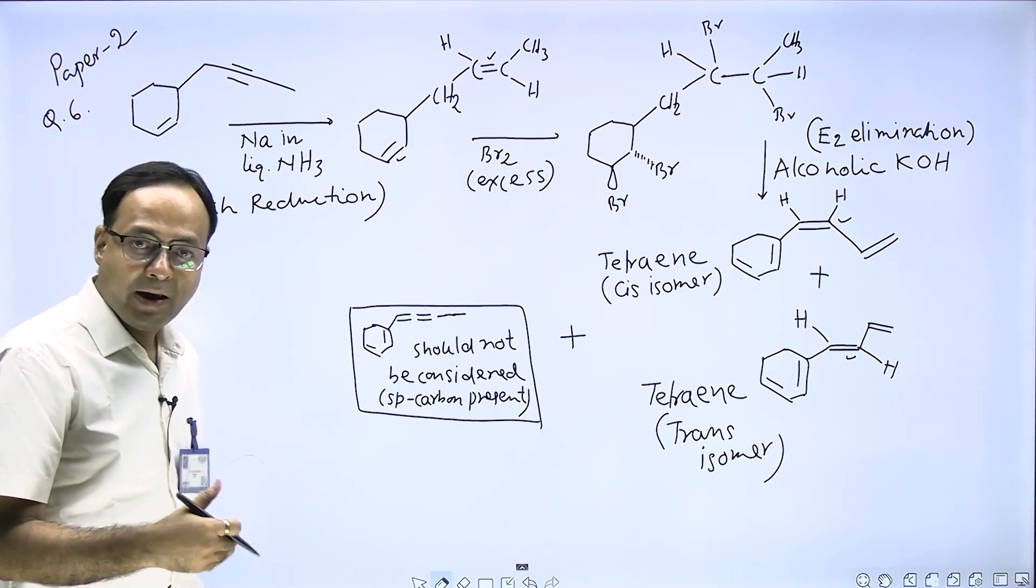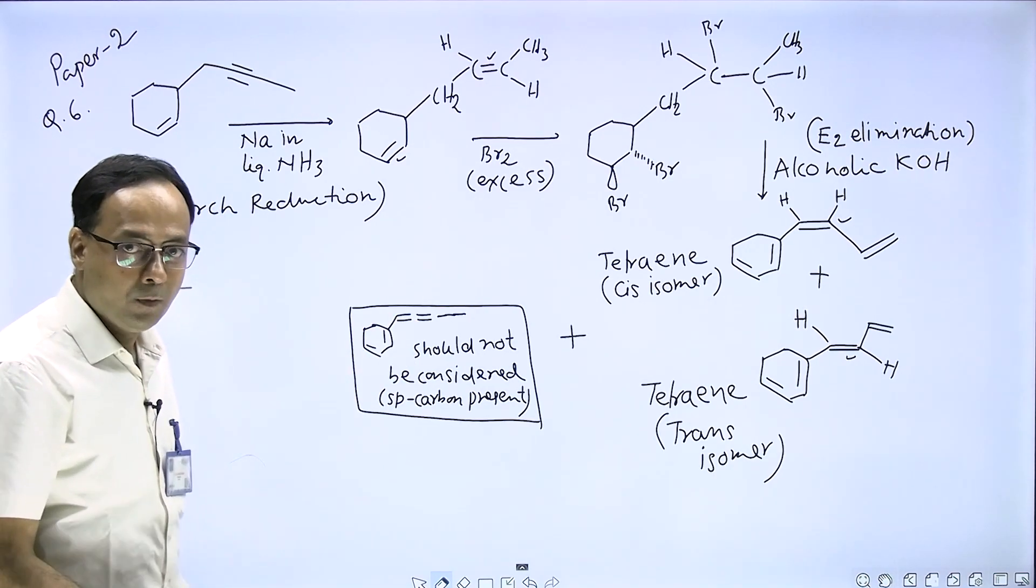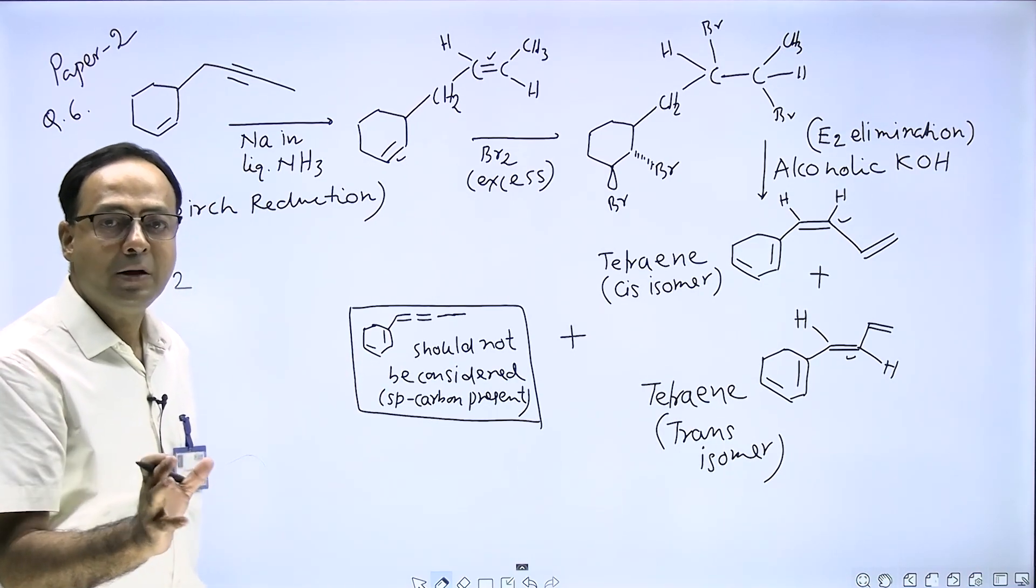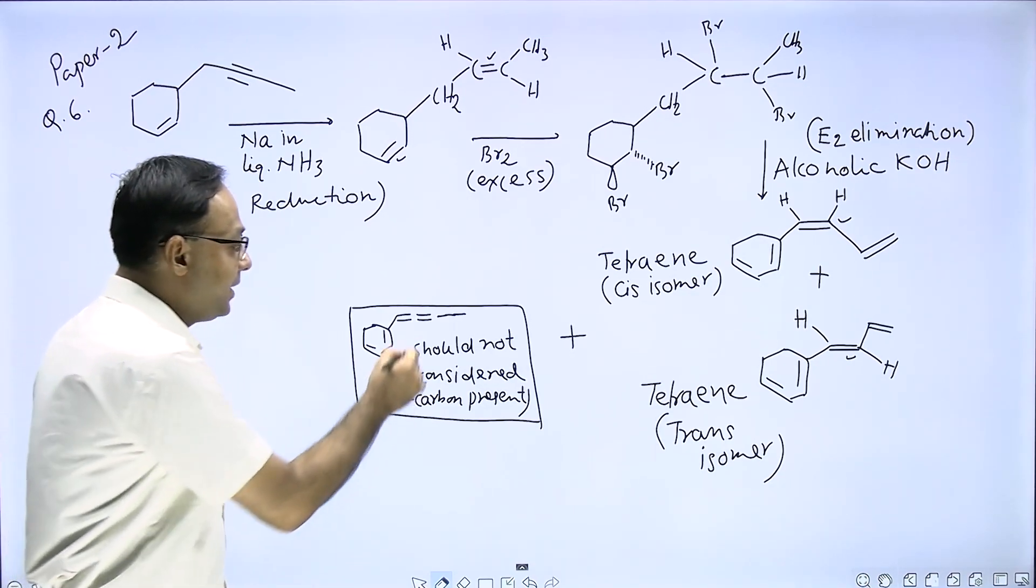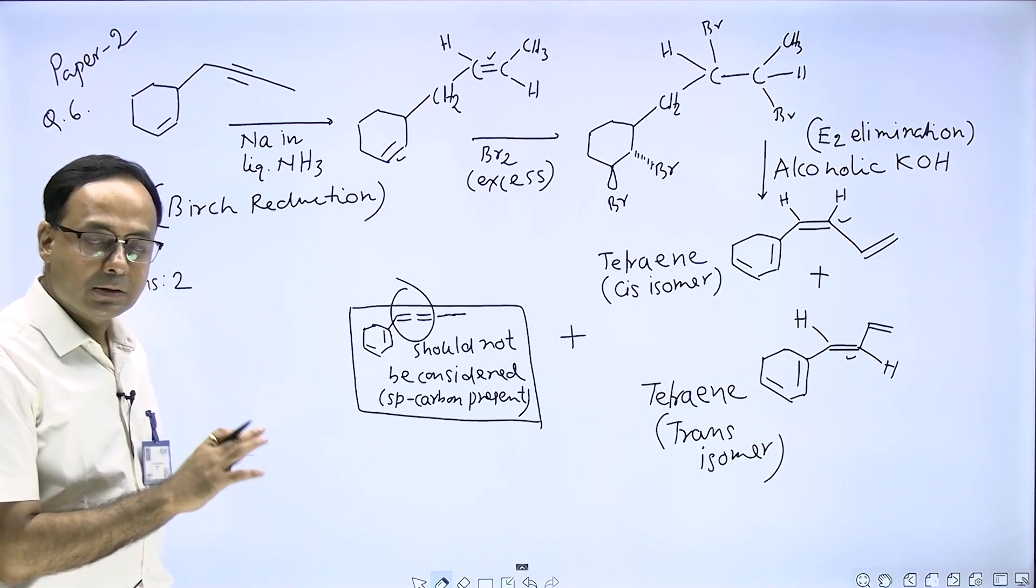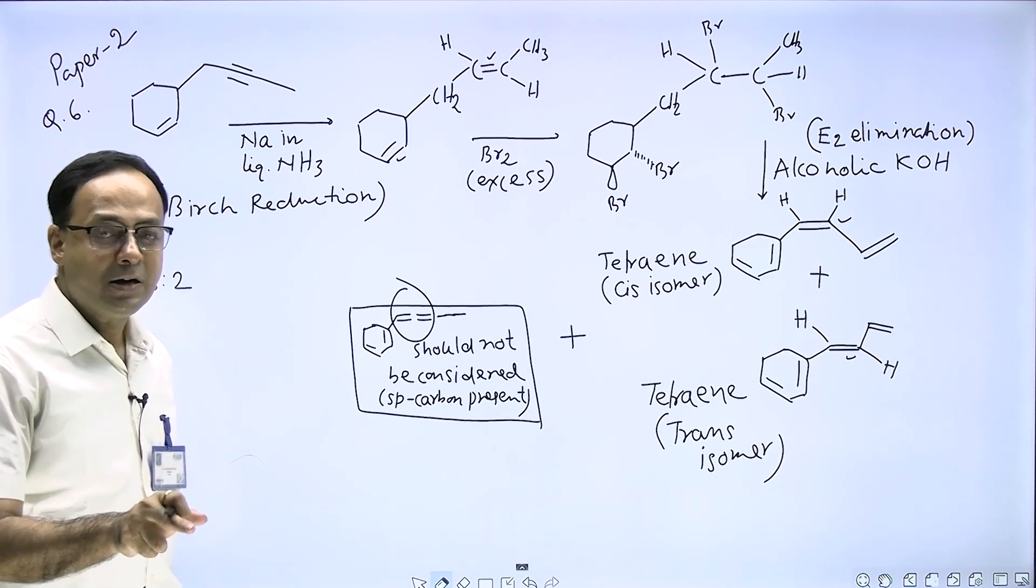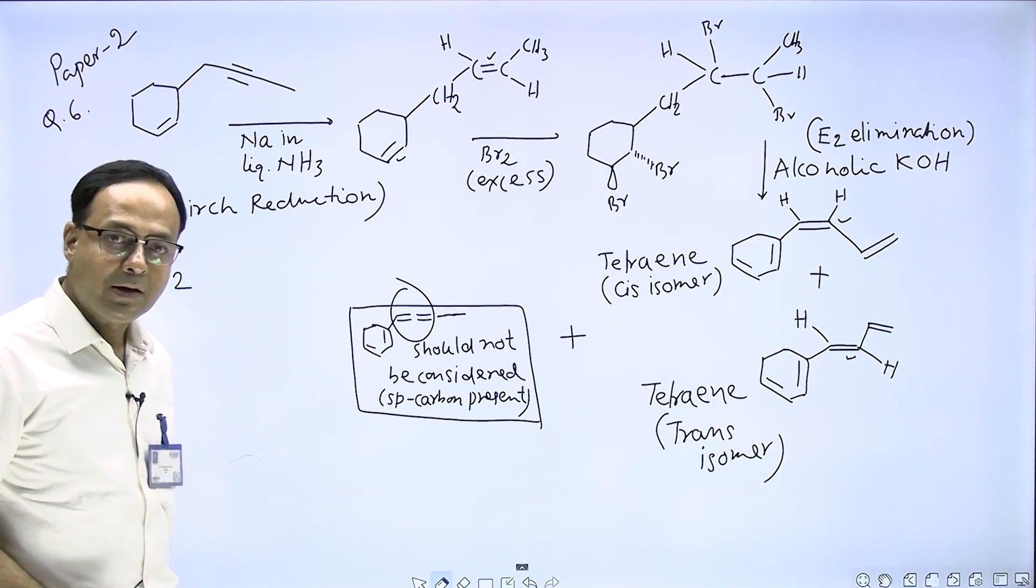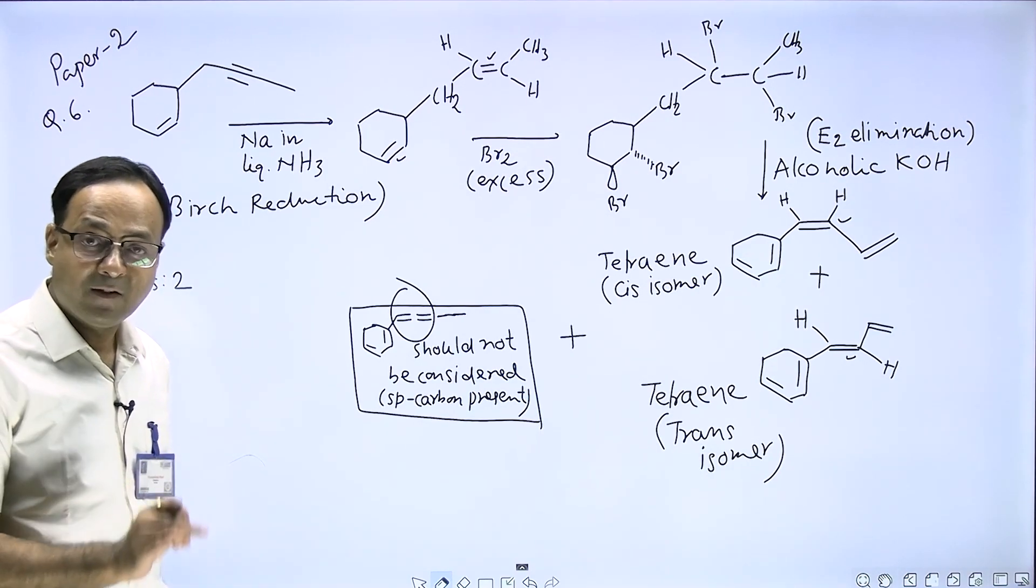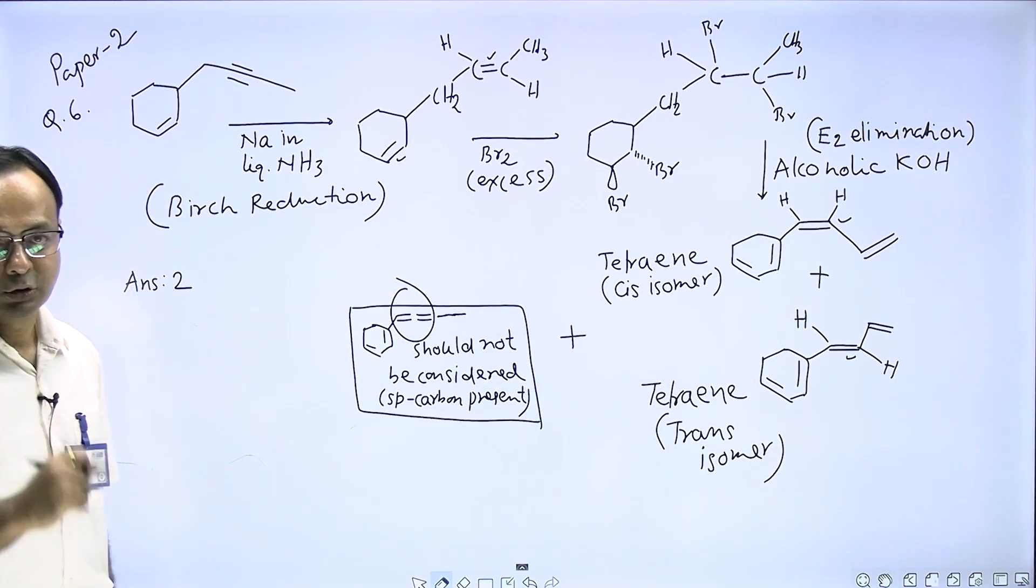Another tetrain can also form where the double bonds are in cumulated alkadiene form. But here one of the carbons is sp hybridized, so this compound should not be considered as tetrain per the question. Where carbon hybridization cannot be sp, this is ruled out. So the answer is two.